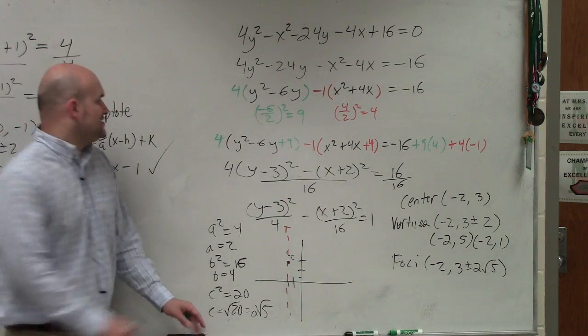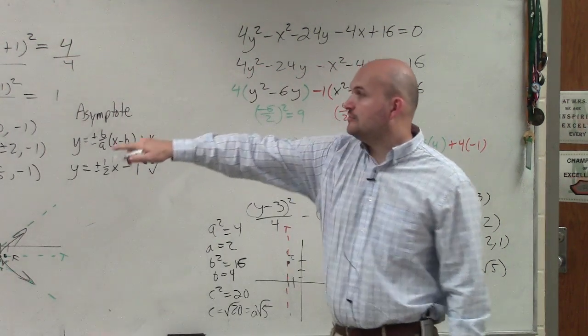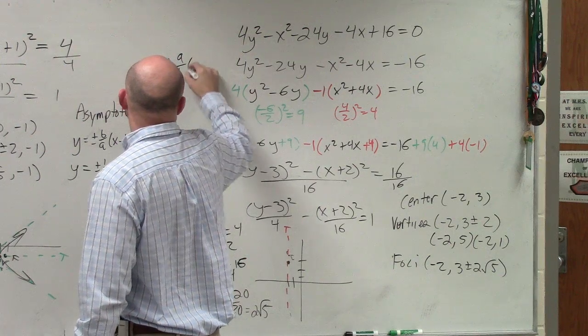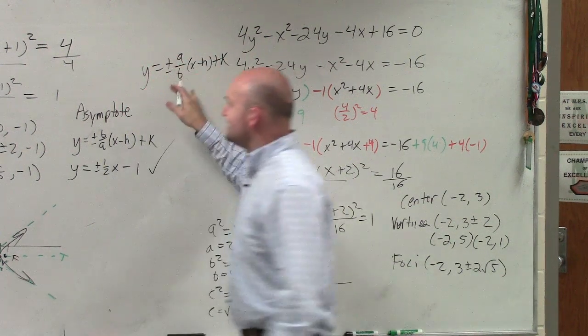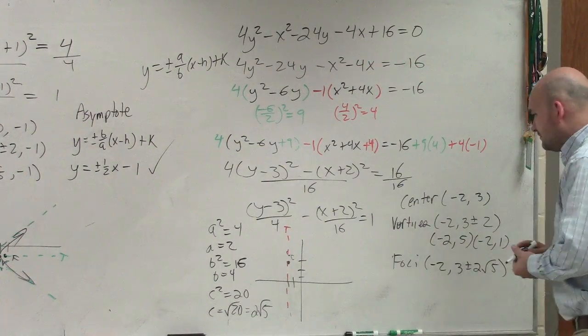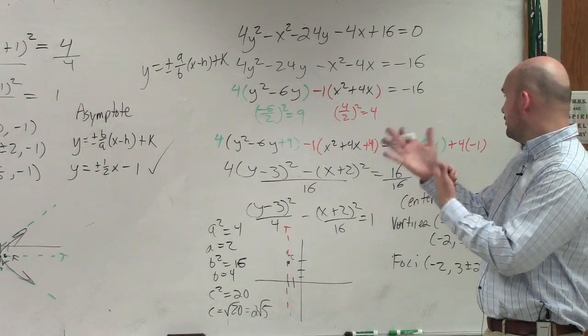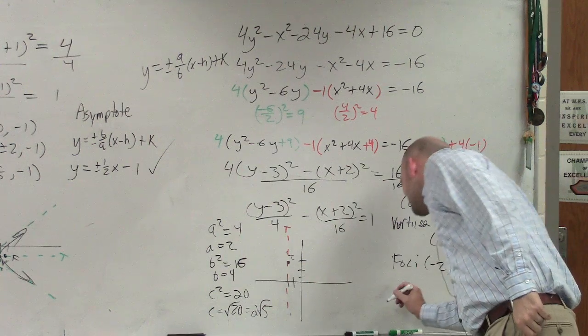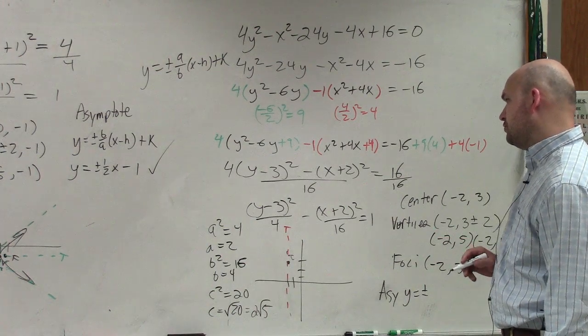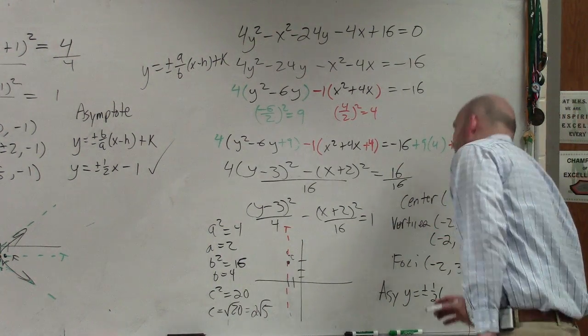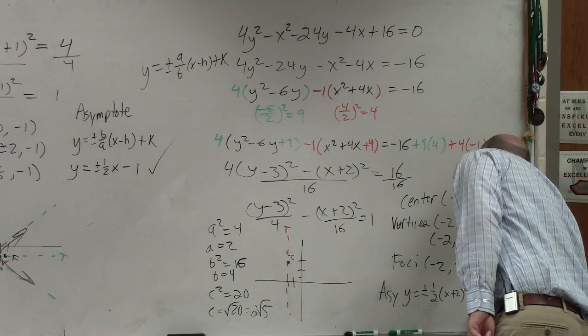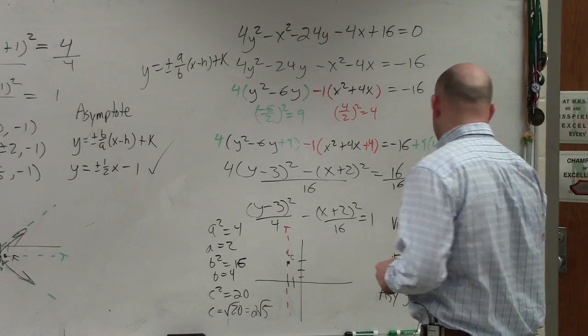And then my asymptotes, the equation for your asymptotes of a vertical transverse axis is y = ±(a/b)(x - h) + k. It's the exact same equation guys, except it's a over b instead of b over a. Say it 95 times and you got it. So do I know my a and my b? Yes. Do I know my h and my k? Yes. So my asymptote is y = ±(a/b), so that's 2/4, which is 1/2, times (x - h), which is (x + 2), plus k, which is + 3.